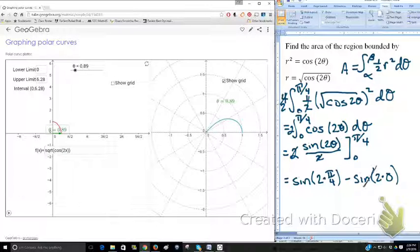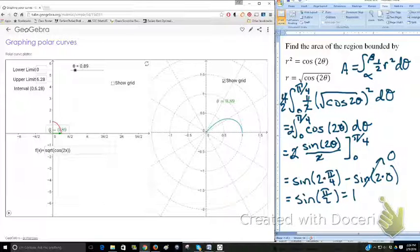2 times 0 is 0, sine of 0 is 0. This is going to be sine of pi over 2, which is 1, and there's our final answer.